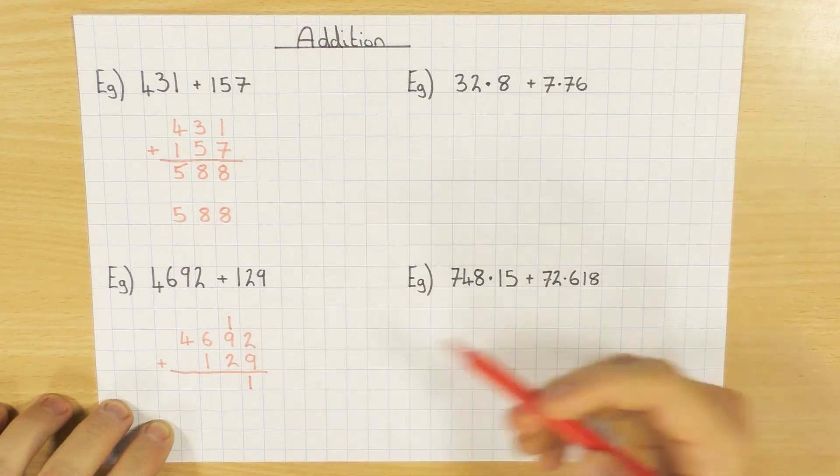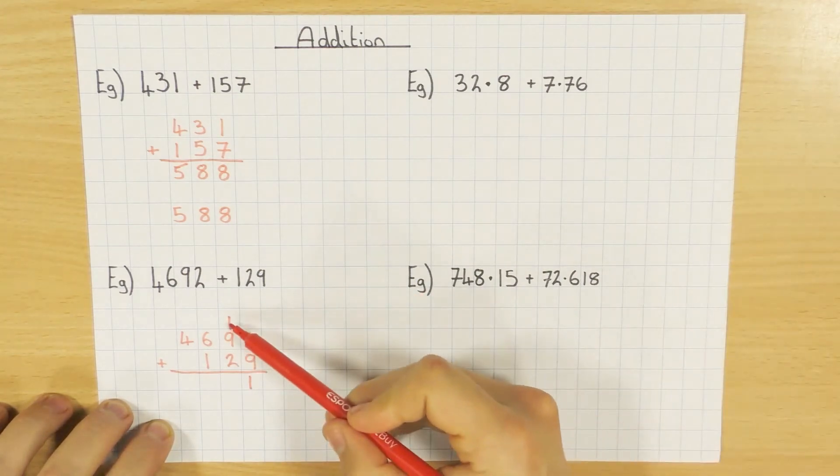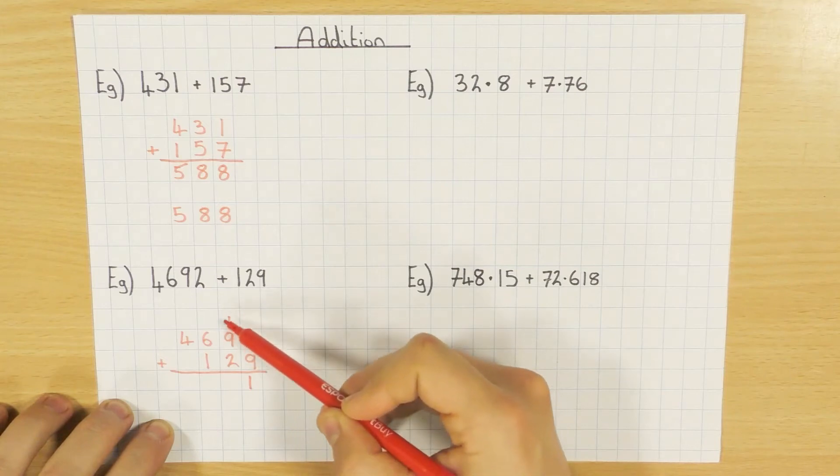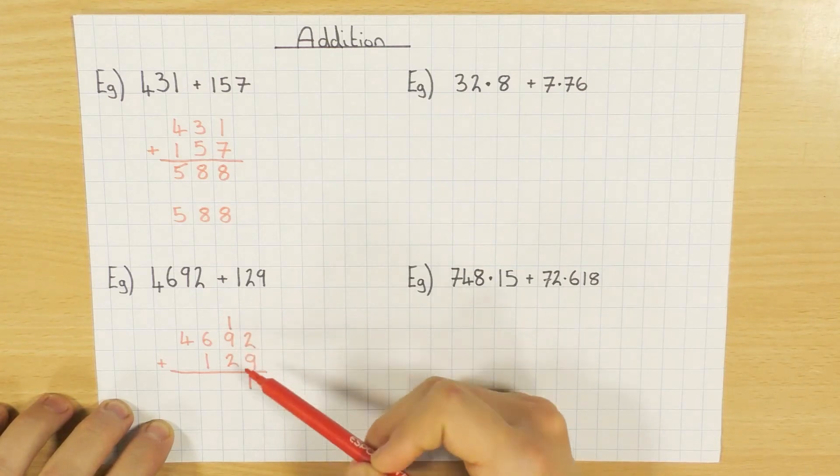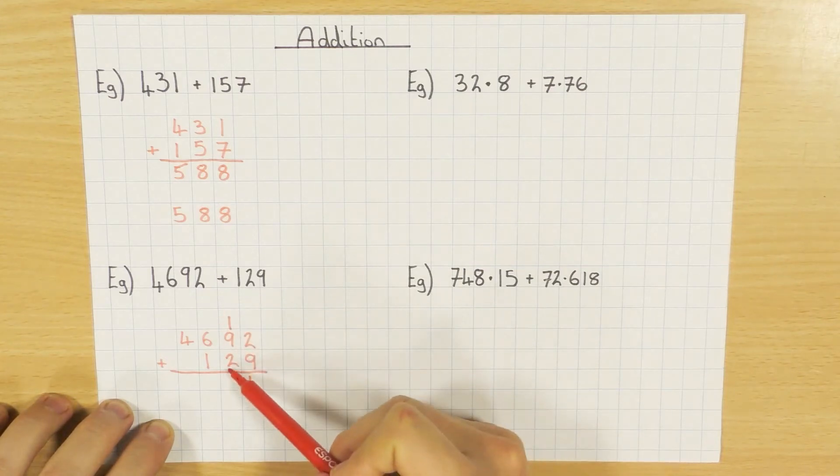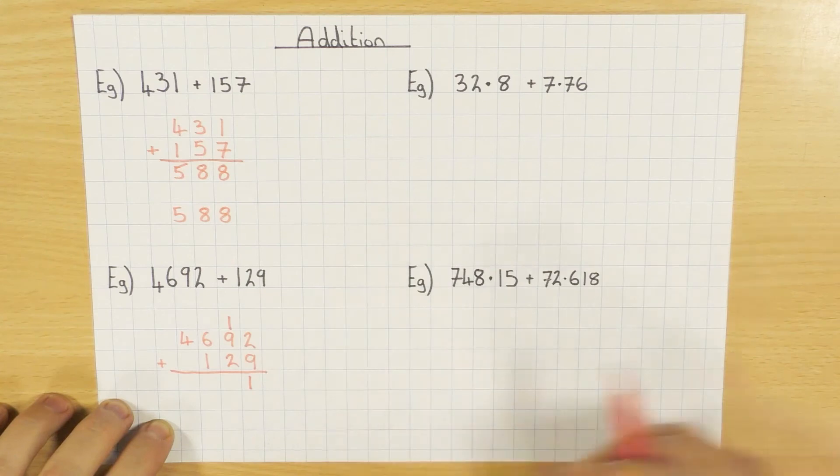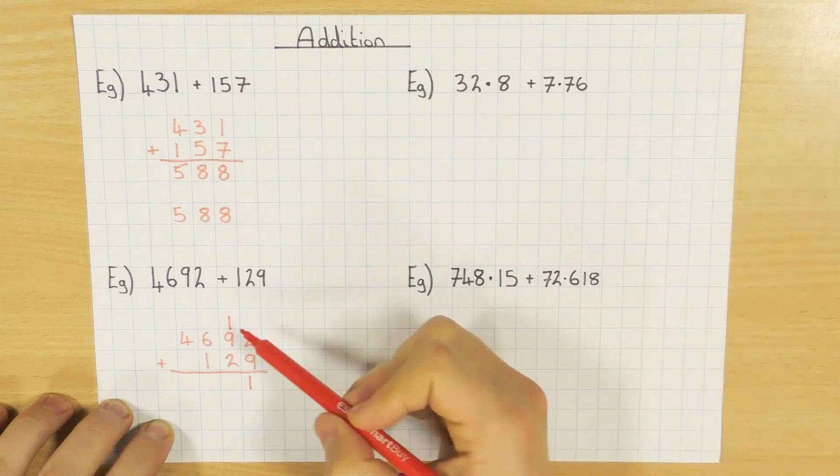Okay, so 2 plus 9 is 11. So tens there, units there. The reason why I put it at the top and why I encourage everyone to do this is so you do not forget to add it next time when you go over to add this column. If you put it down here on the bottom, I've seen so many cases where people forget to do it. So stick it at the top and make sure you remember.